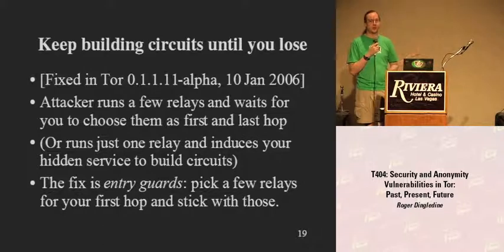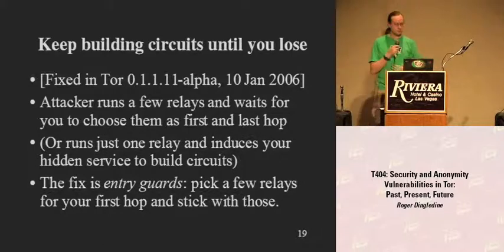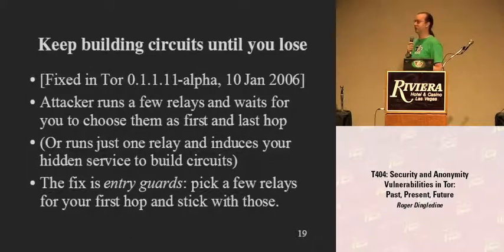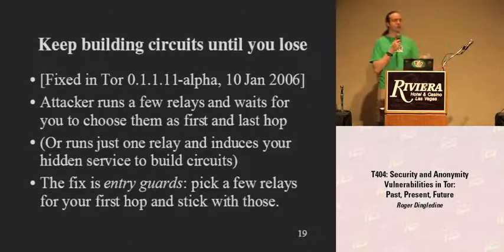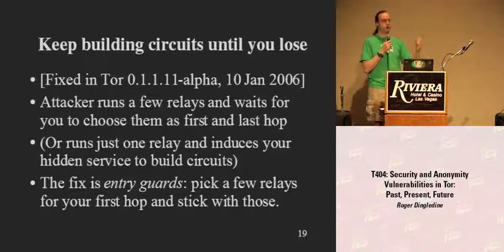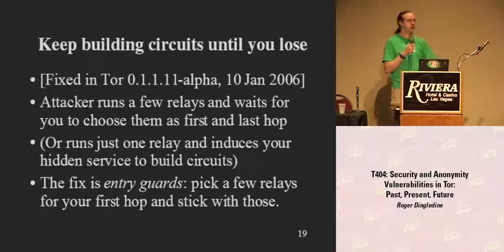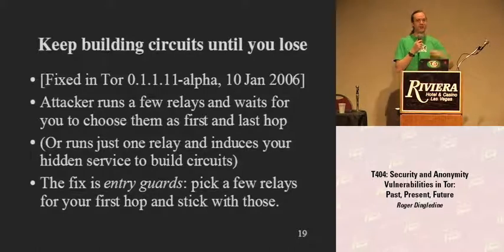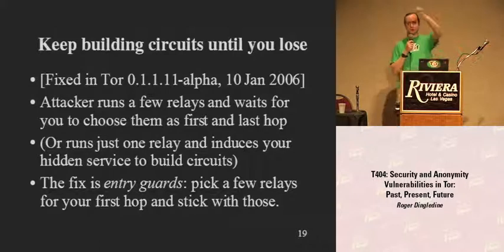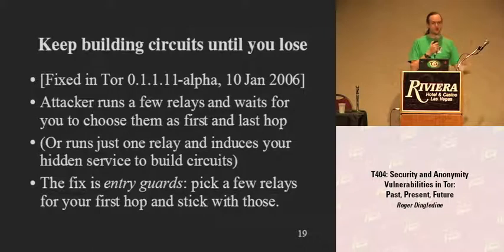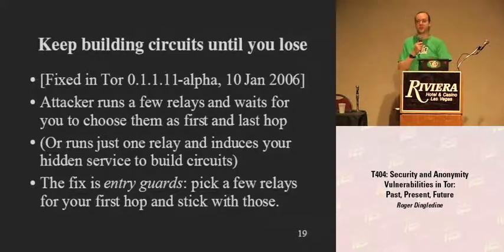The defense against this is what we call entry guards. Every client picks three or four Tor servers as her first hop always, and sticks with those until they disappear. Previously, as Alice uses Tor more and more, the probability she eventually gets screwed goes up to one. With entry guards, she's either screwed at the beginning — meaning she picks a bad entry guard — or she's never screwed because she never keeps rotating until she gets there.